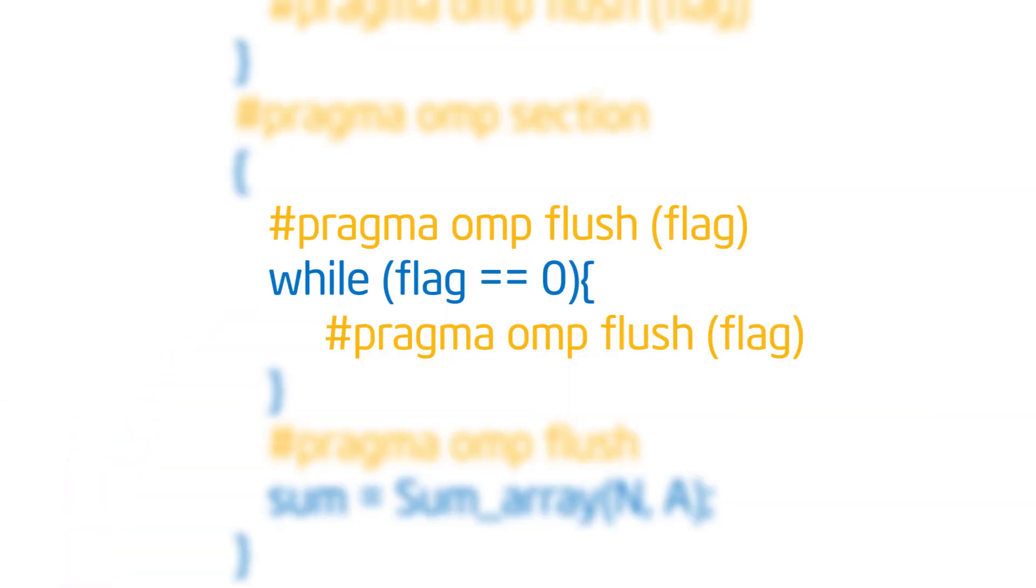So by putting that flush in the body of the loop, I am forcing the compiler to, every time it goes into that loop, to go all the way back down through the memory hierarchy and grab a flush value of the flag. That's why that's got to be there. You've got to have the flush in the body of the loop.